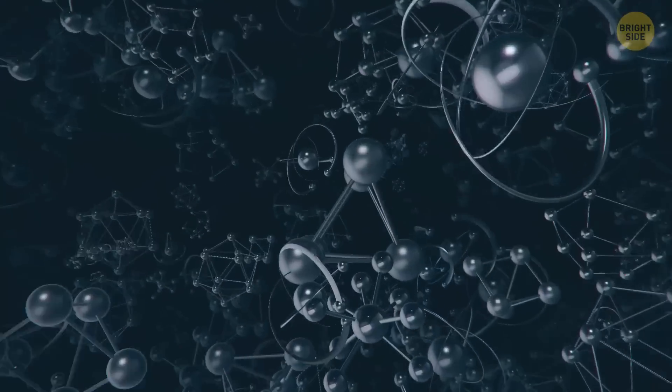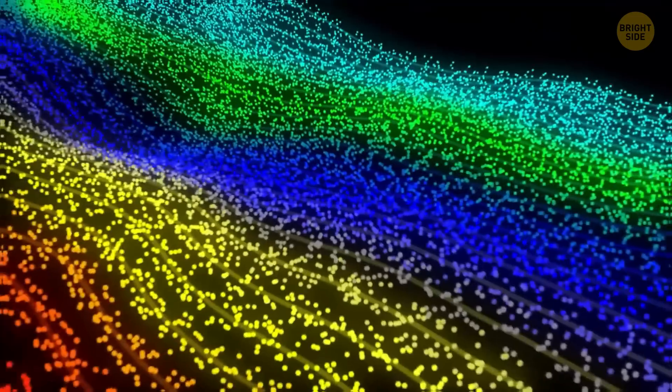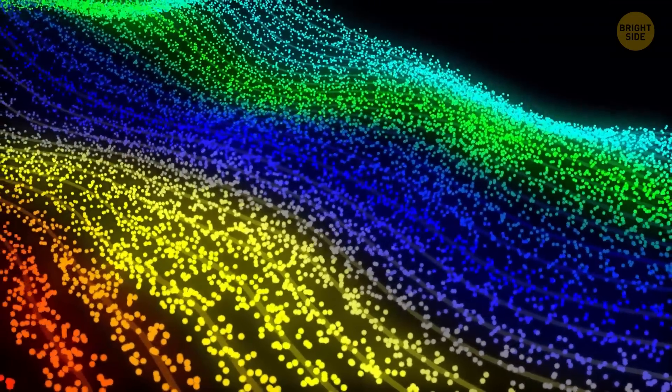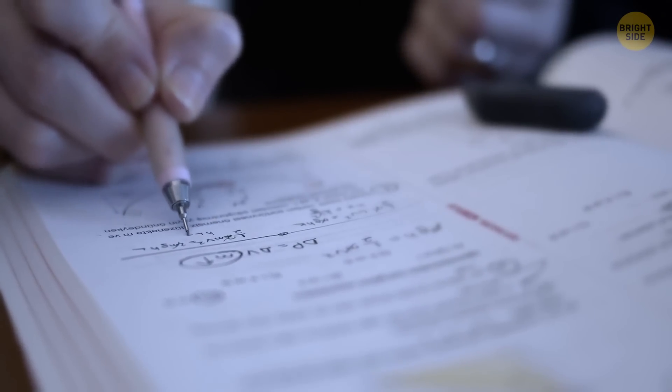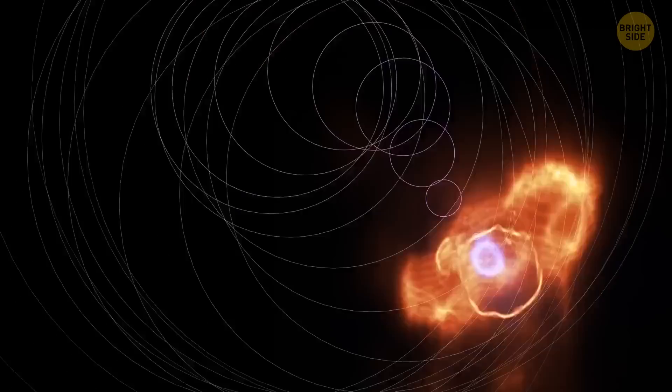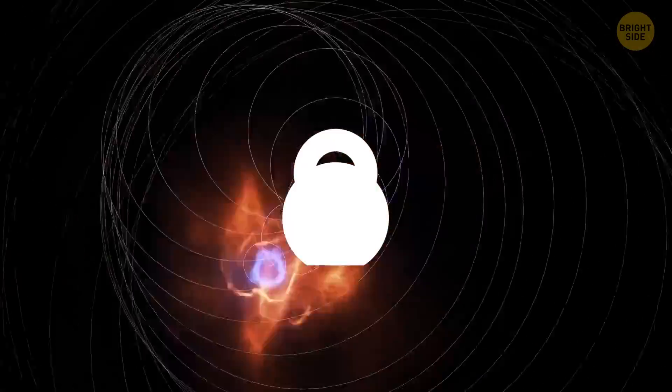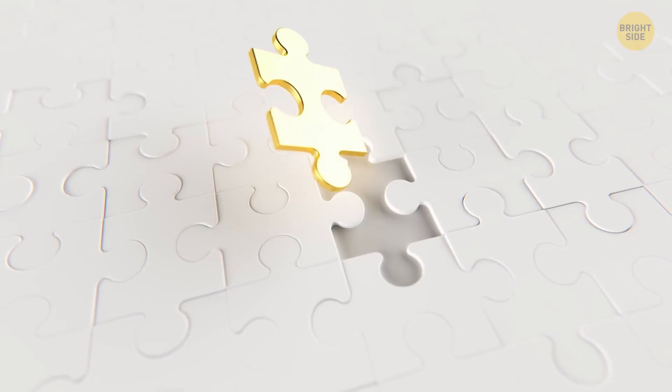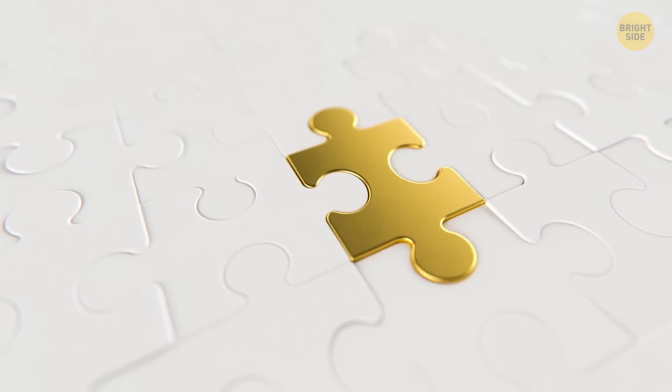Not only does it help to confirm the Standard Model, but it also highlights the need for new theories and models to explain what the Standard Model can't. Without the Higgs boson, the Standard Model wouldn't make sense, and scientists would have to come up with a whole new theory to explain why particles have mass. But with this holy particle, everything fell into place and the Standard Model was complete. It was like solving a giant puzzle or finding a glue that holds the universe together.